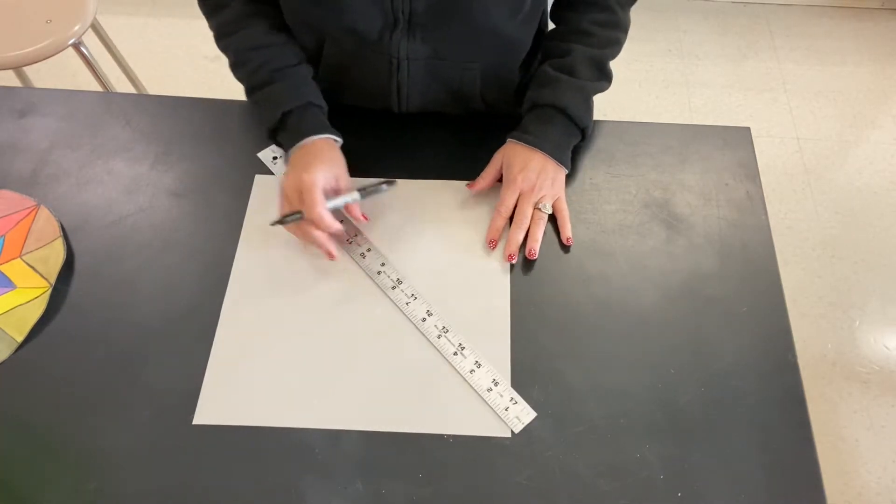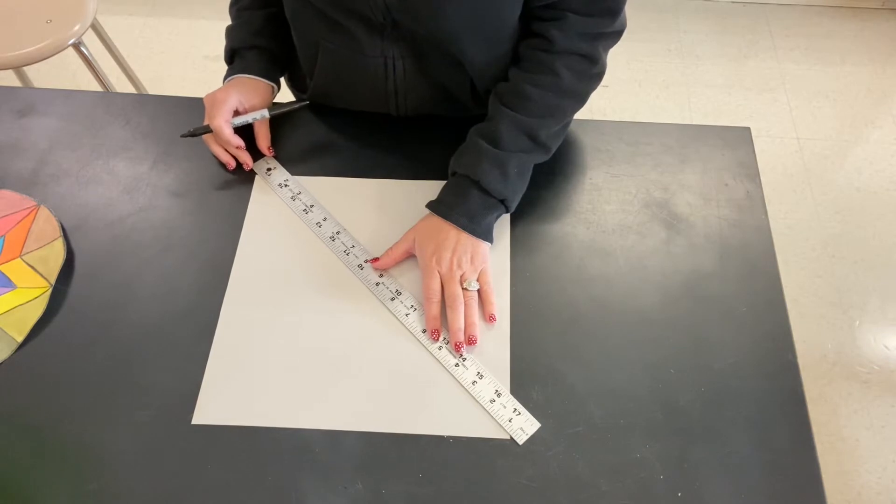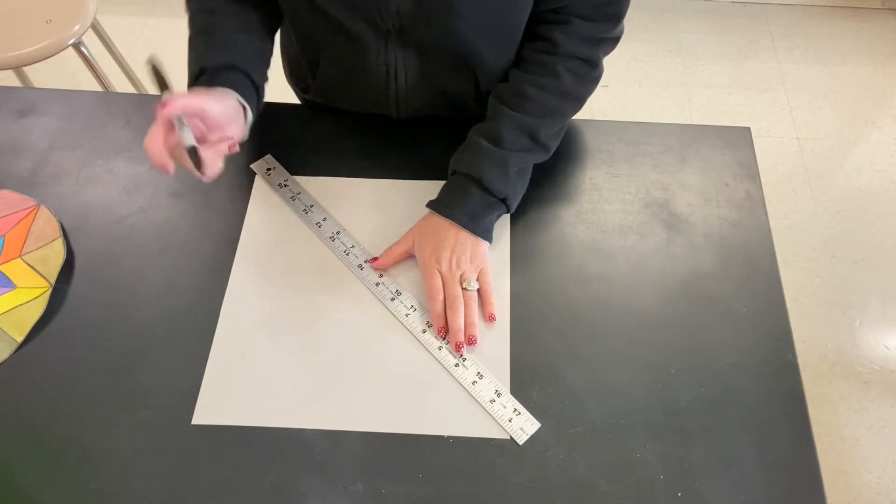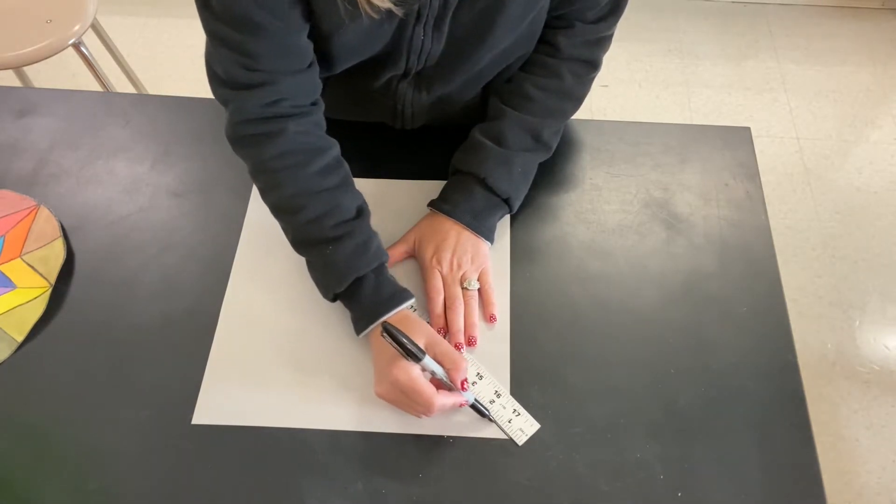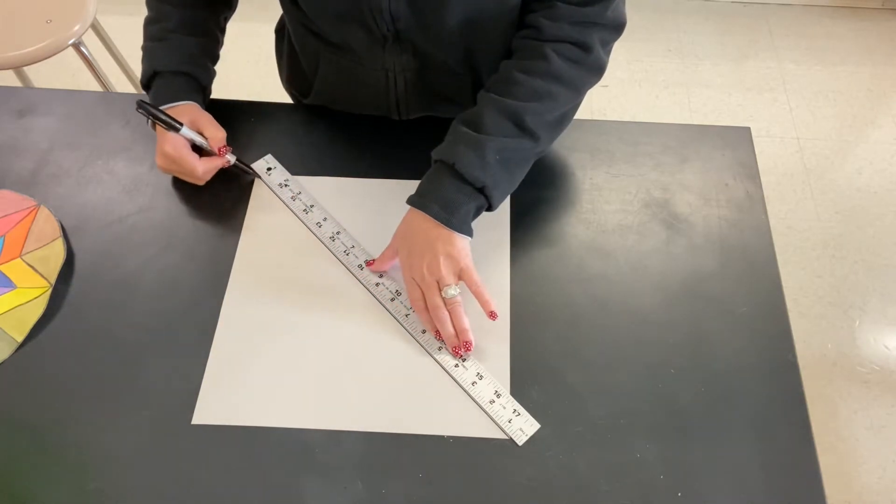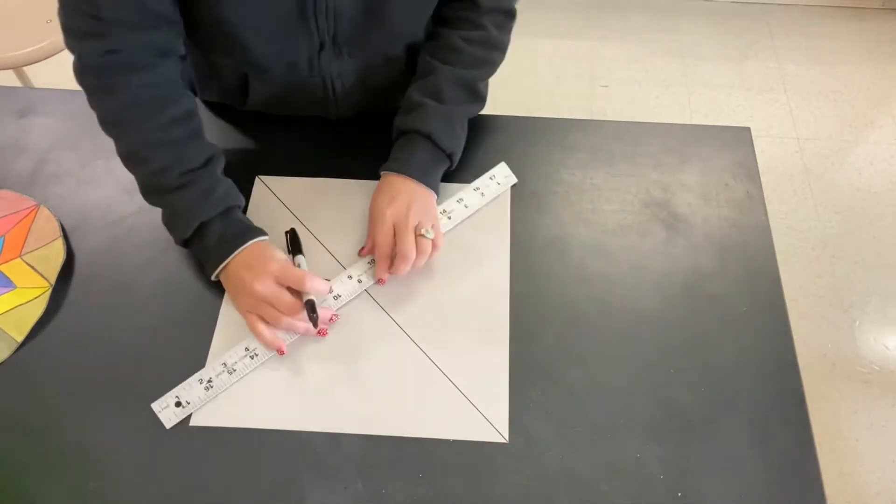So you're going to take your ruler and line it up from one corner to the other corner diagonally. You're going to use pencil—I'm using pen just so you can see what I'm doing a little bit better. And you're going to do that on both sides.